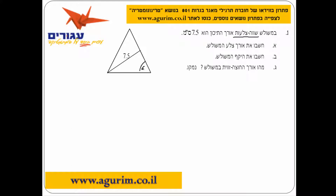זאת אומרת זה 60 מעלות. דבר שני, אנחנו יודעים שבמשולש שווה צלעות, התיכון הוא גם חוצה זווית וגם גובה. זאת אומרת יש לנו פה משולש ישר זווית, ואומר לנו שזה תיכון, אז זה x וזה x.